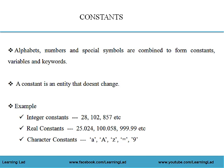Alphabets, numbers and special symbols like underscore are combined to form constants, variables and keywords. A constant, as the name indicates, is an entity that doesn't change. We can classify the constants into integer constants, real constants and character constants.